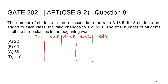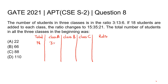So let's assume that in the beginning there are total n students divided into three classes — class A, class B, and class C. Class A has 3x students, class B has 13x students, and class C has 6x students. So the ratio of students in the three classes will be 3 to 13 to 6, just like given in the question.